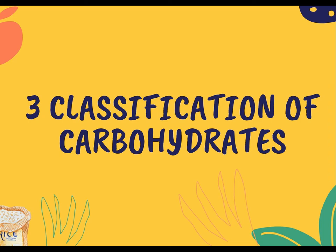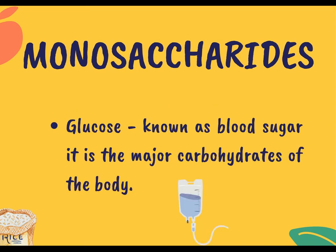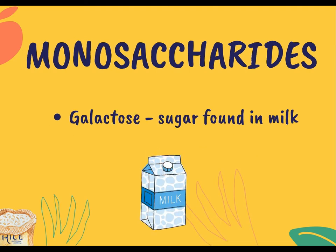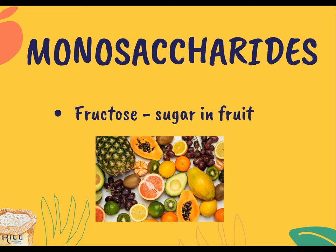There are three classifications of carbohydrates. The first is monosaccharides. Monosaccharides is a simple sugar and it is the basic unit of carbohydrates. One important monosaccharide is glucose — the major carbohydrate of the body, also known as blood sugar or dextrose. Next is galactose, the sugar found in milk, and fructose, the sugar found in many fruits. Here is the structural organization of monosaccharides. Notice that the chemical formula is the same for glucose, galactose, and fructose — the difference is the arrangement of their molecules.